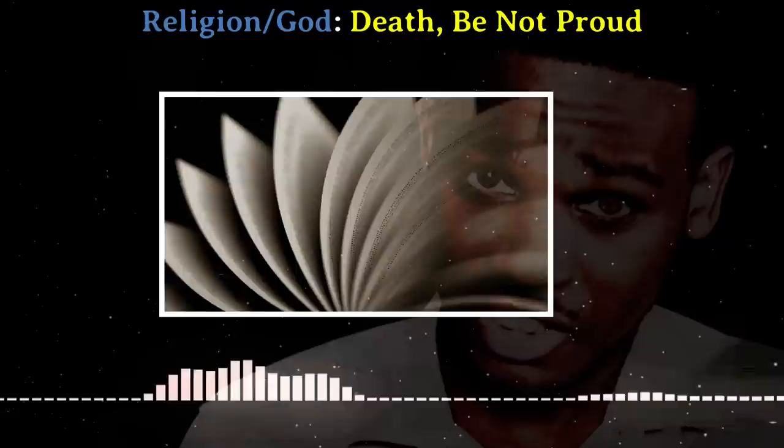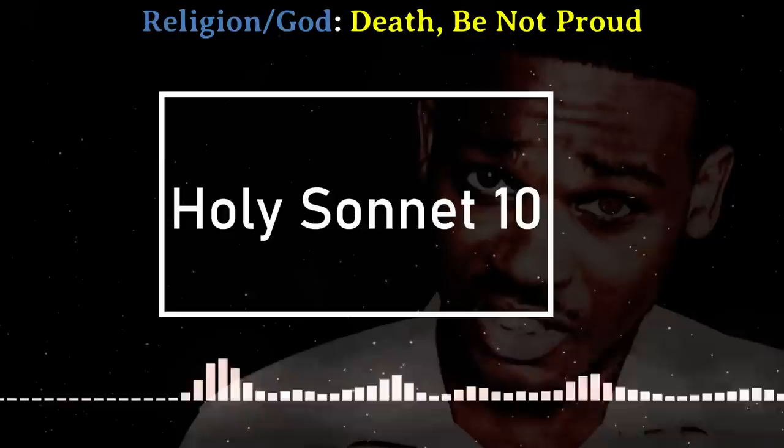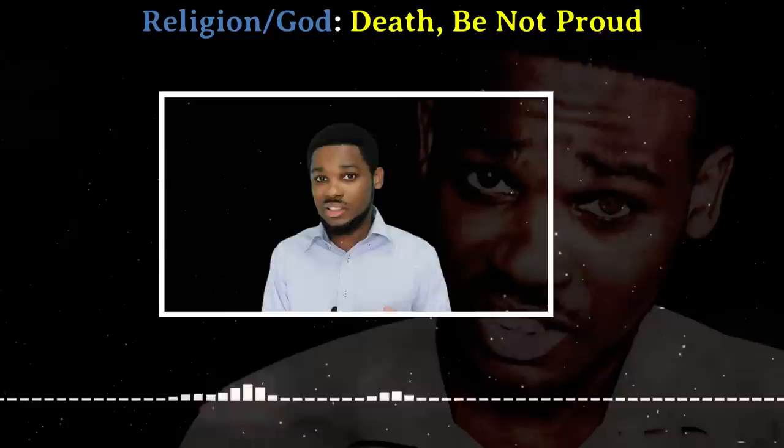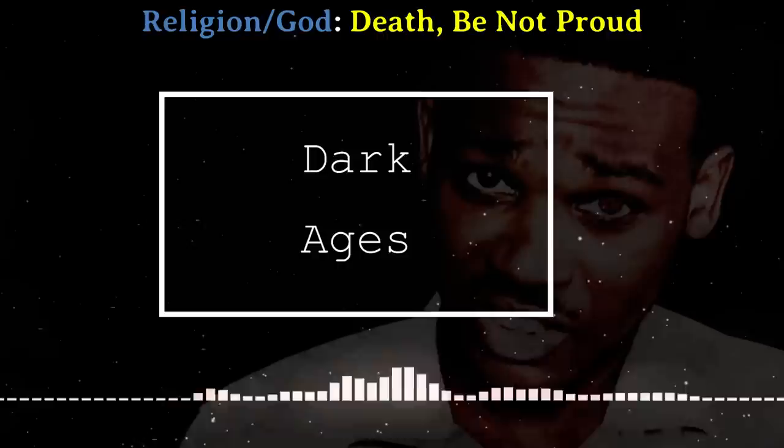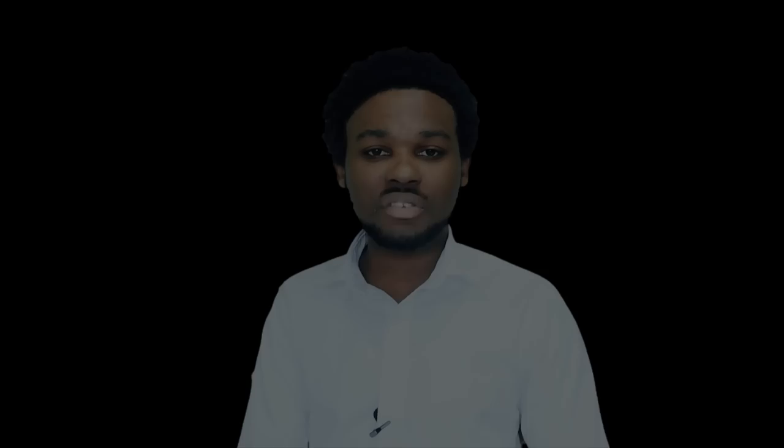In Death Be Not Proud, the basis of the speaker's argument against death is the eternal life promised by God. Because the speaker looks forward to eternal life, impending death is seen as nothing to fear, as it doesn't actually mark the end of life but the beginning. The comparison of sleep to death, the mention of the promise of eternal life, and the conclusion that death will die are all references to Christian ideologies. Considering the background of the poet, it is safe to say that the influence for these ideologies came from his Christian beliefs.